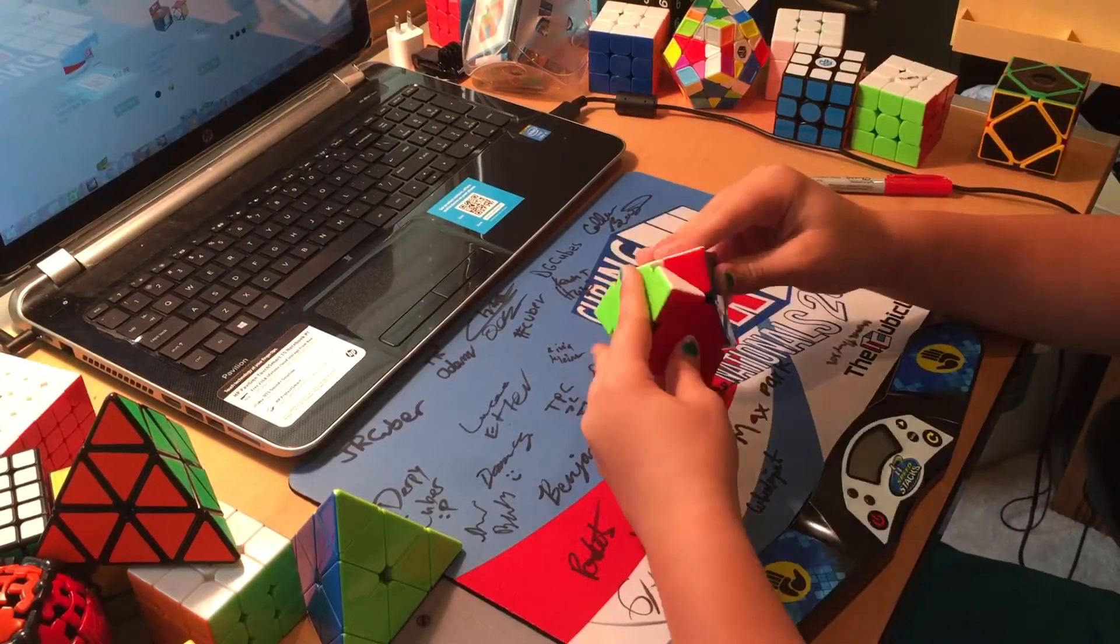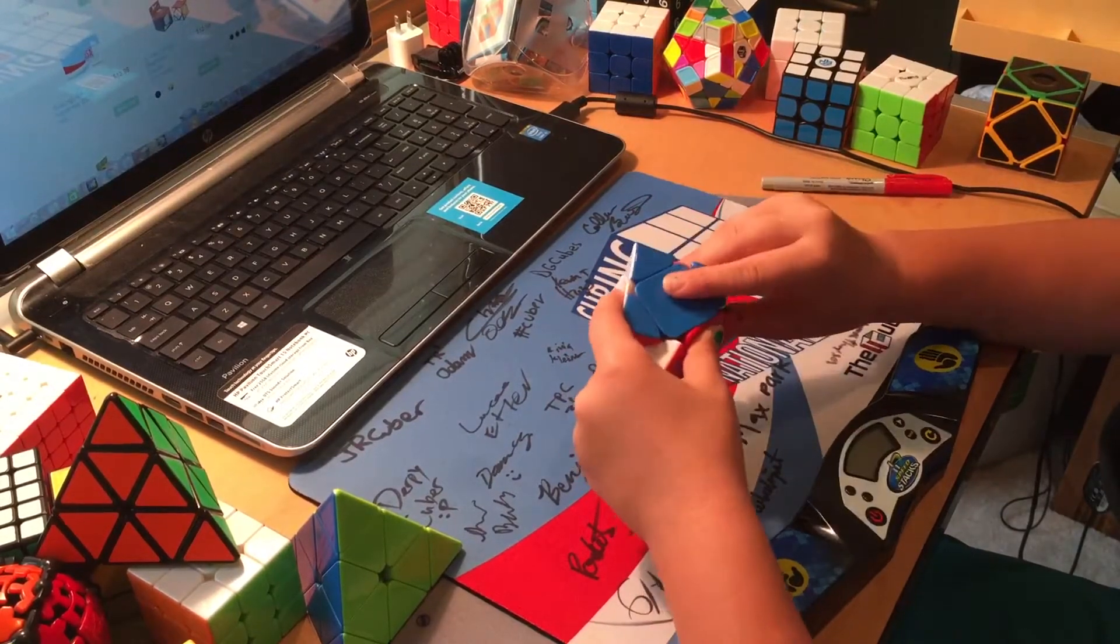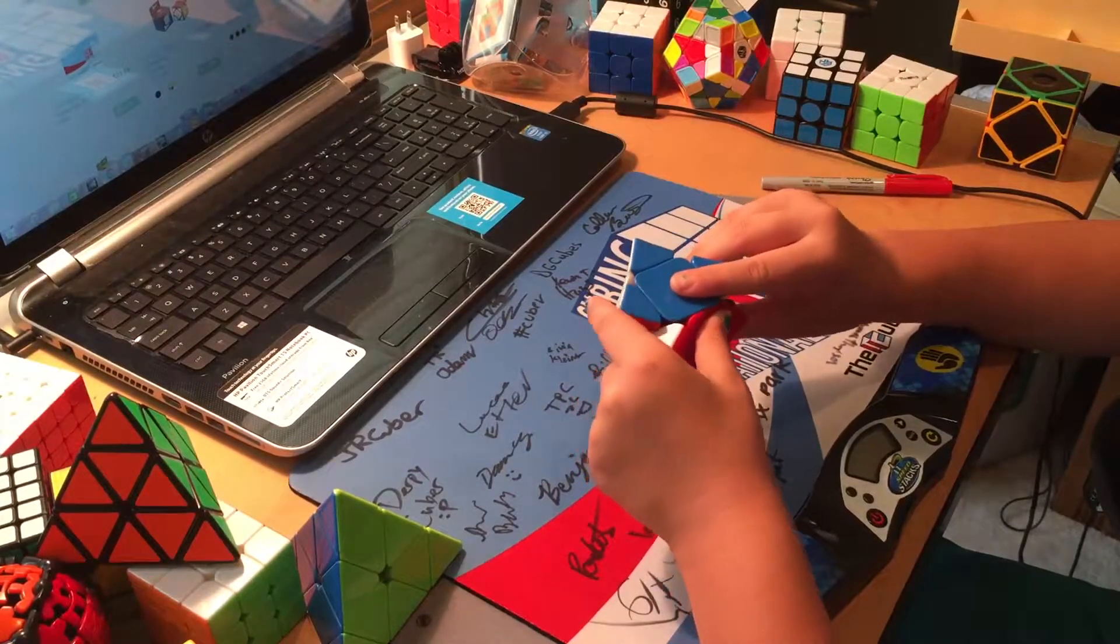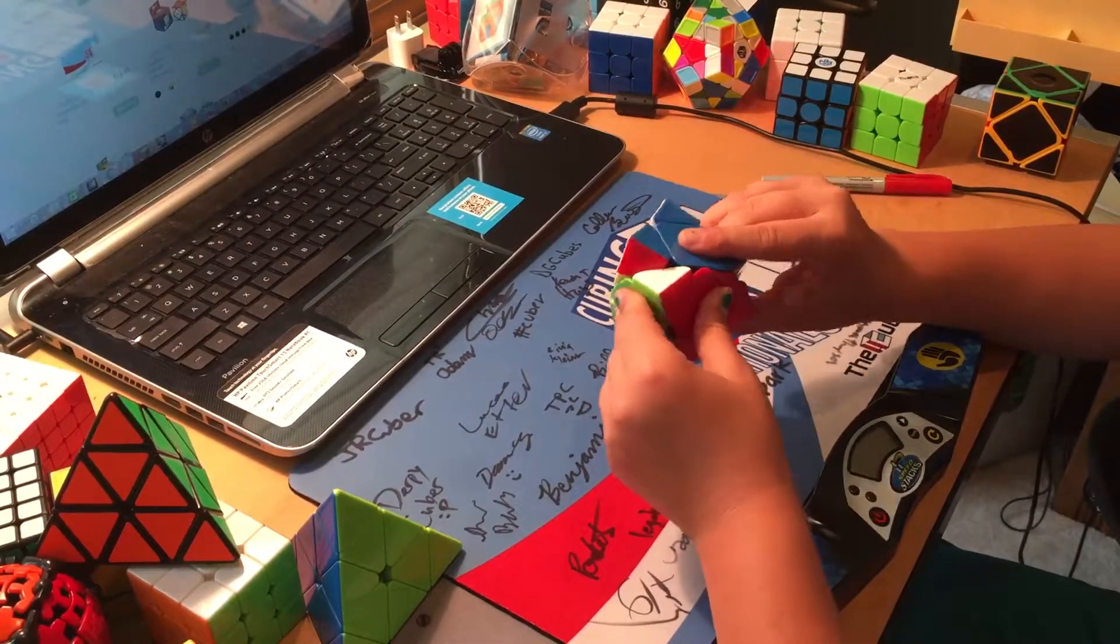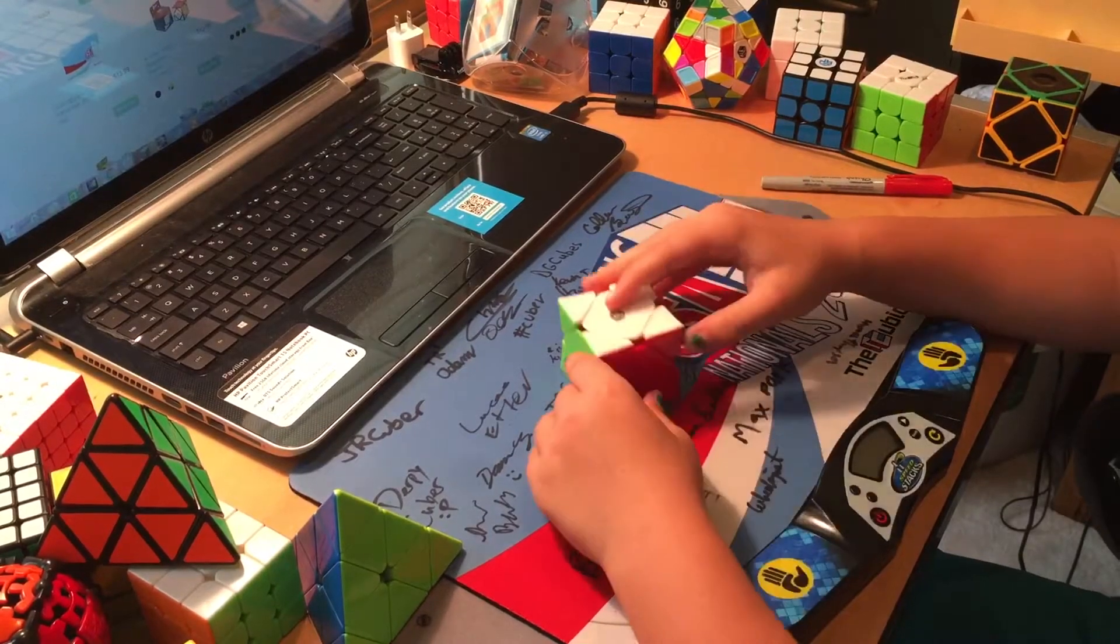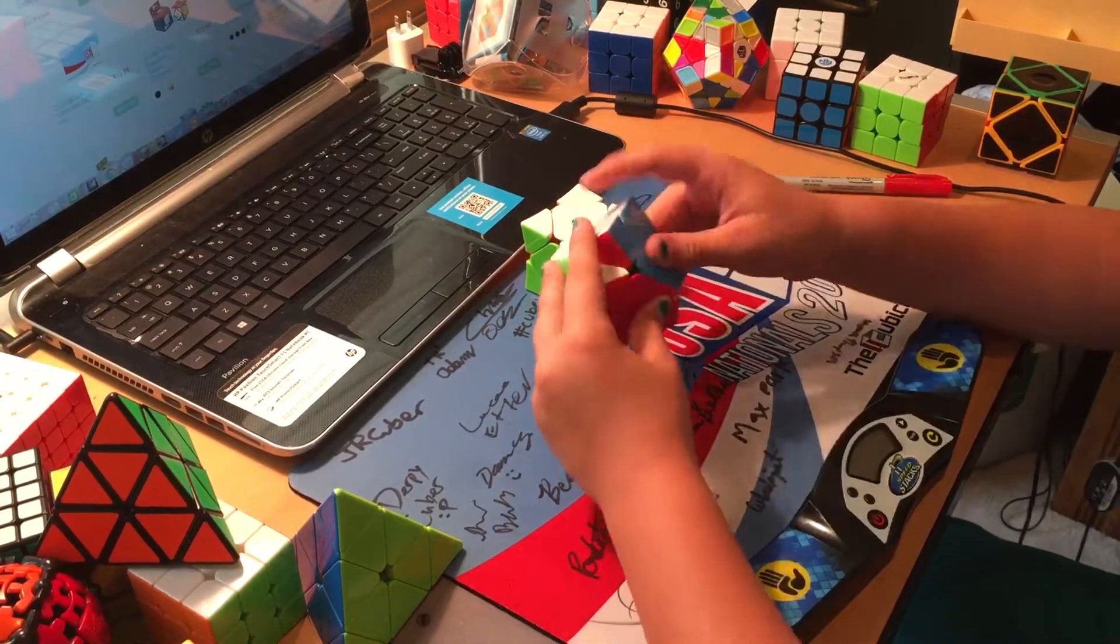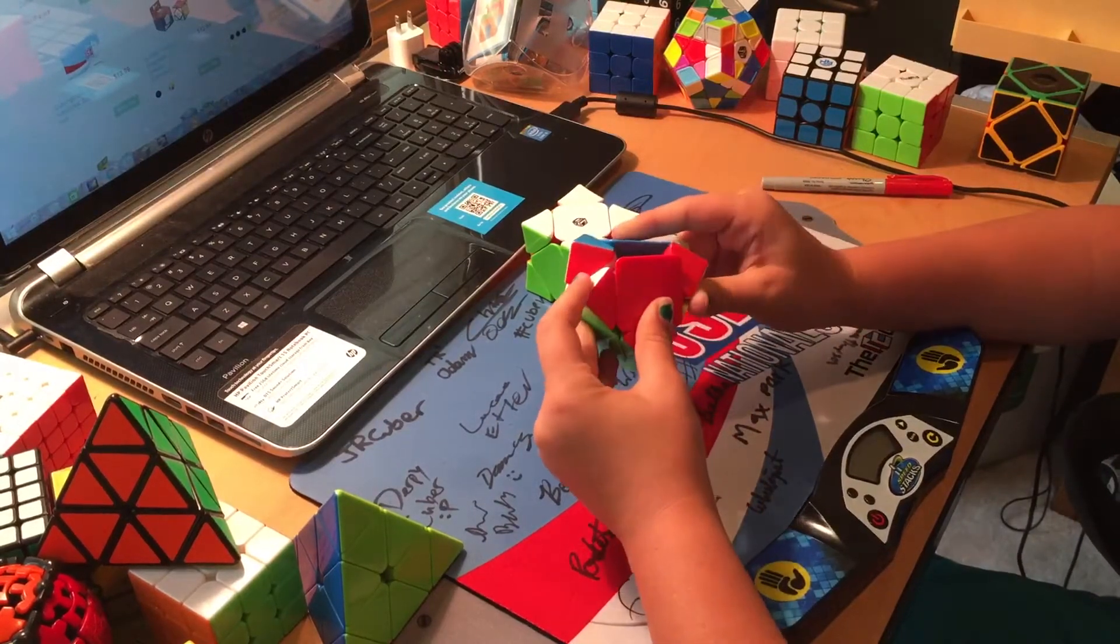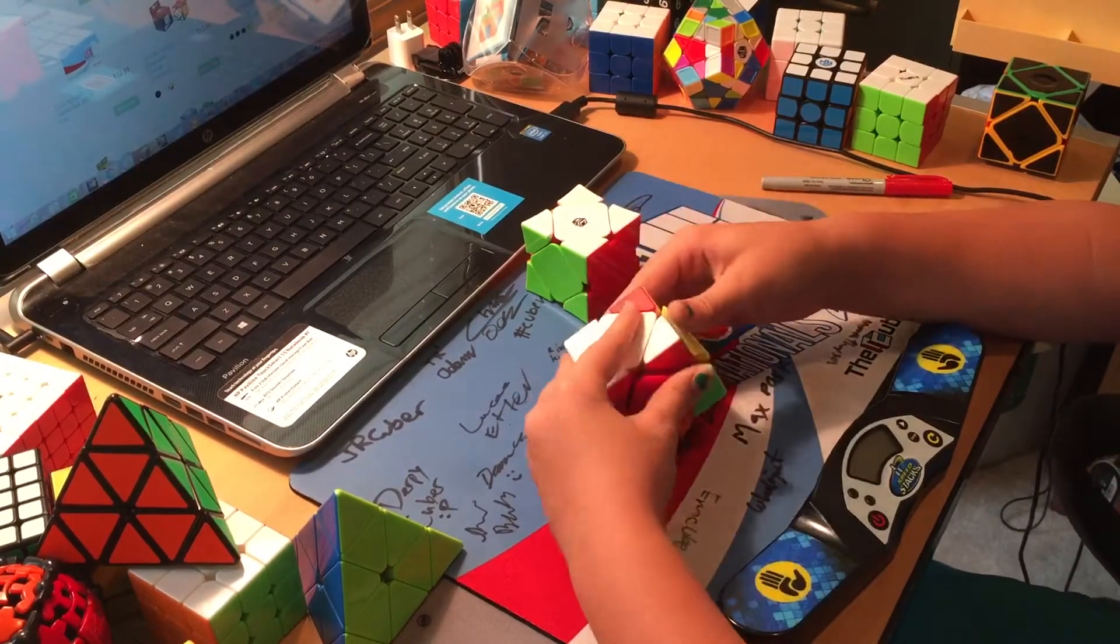It has pretty decent corner cutting, can cut 35 degrees. Compared to the GAN Monster Magnetic, most people say the Monster Magnetic can still cut more than the X-Man without popping.